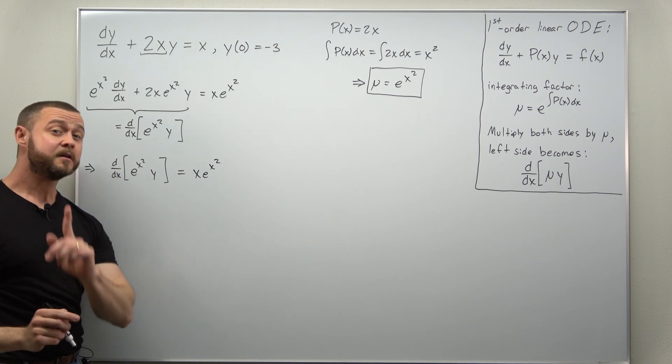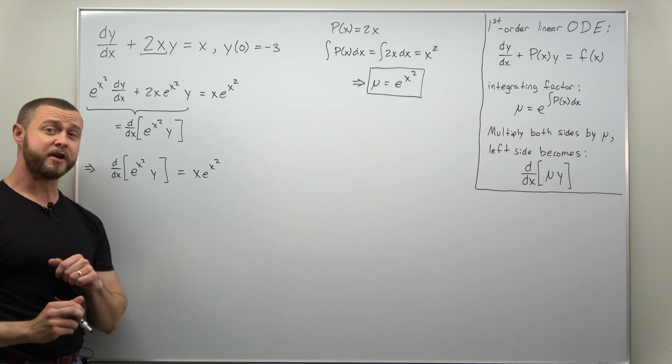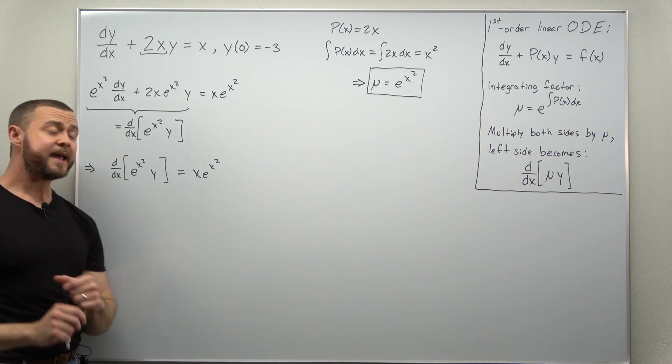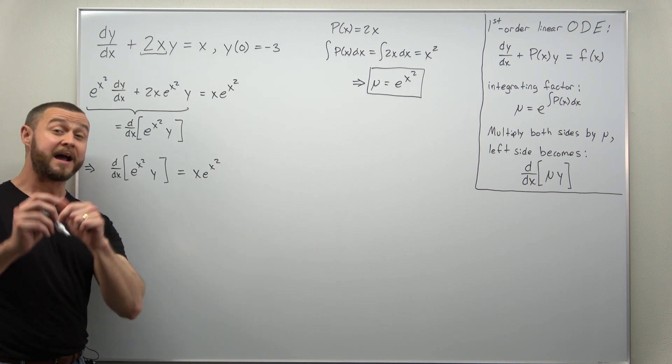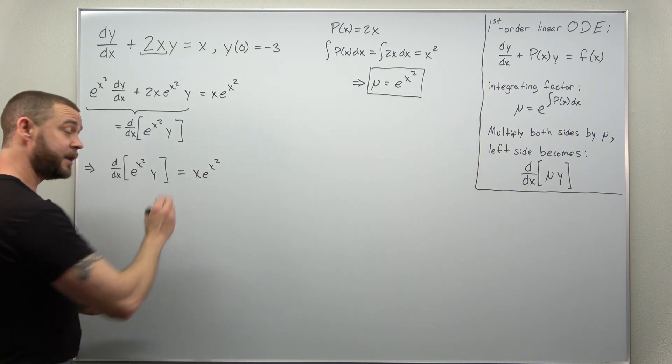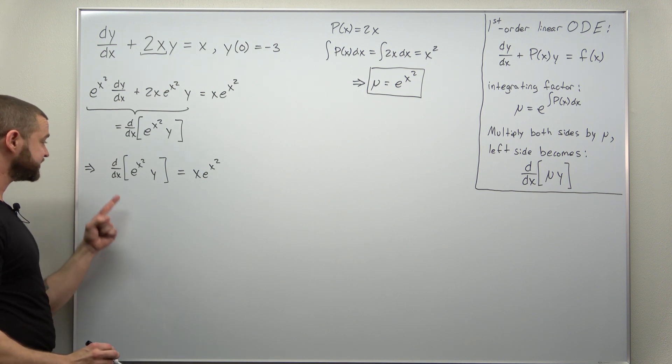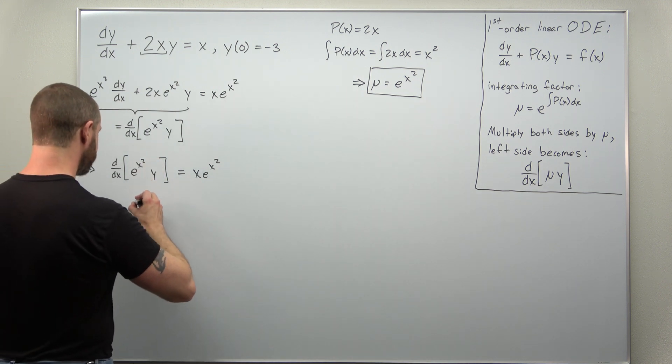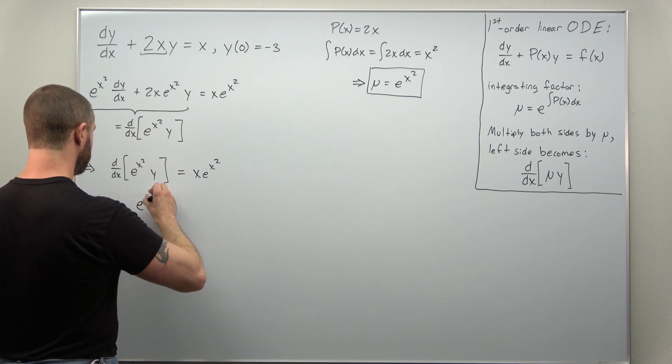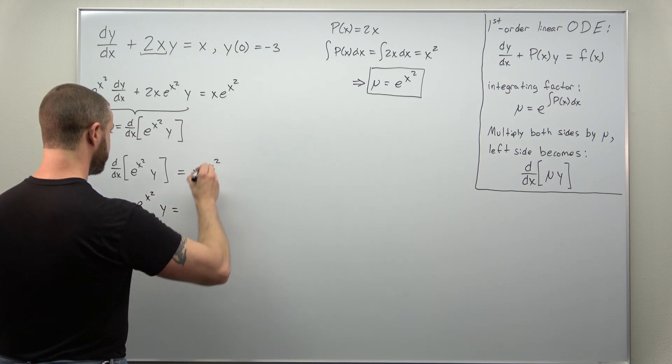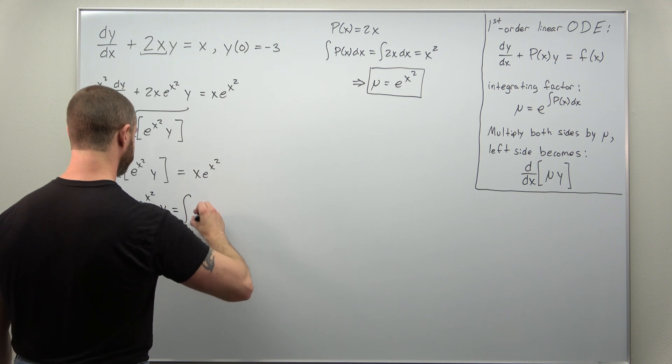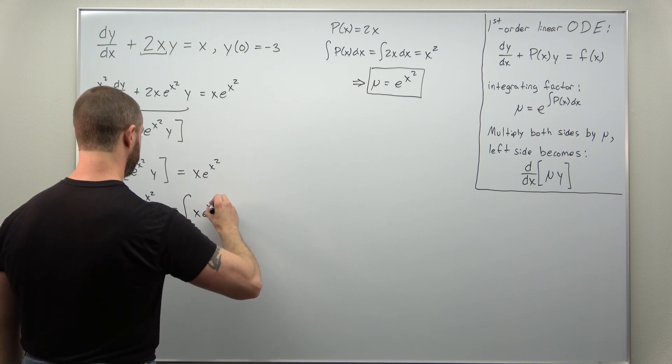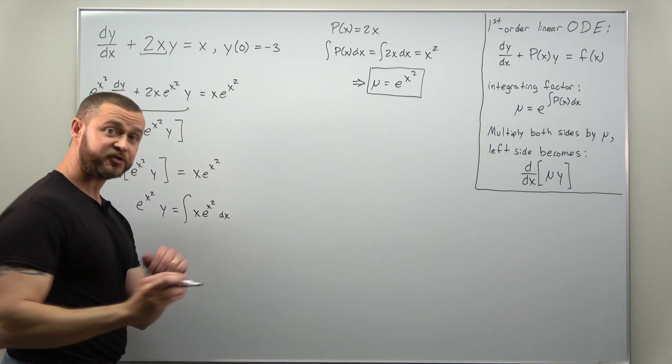And now we're ready for the main idea of differential equations. We're going to cancel derivatives by integrating. So we're going to integrate both sides with respect to x. Integrating a derivative should cancel, leaving you with e to the x squared times y, and we integrate the right side with respect to x.